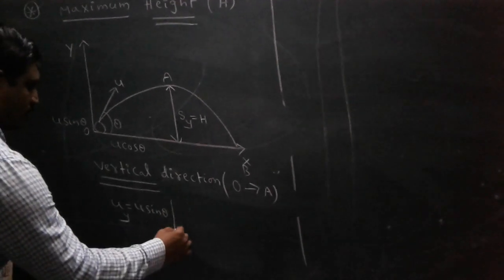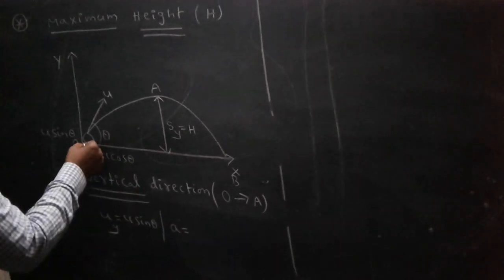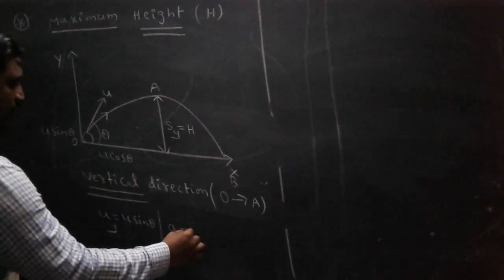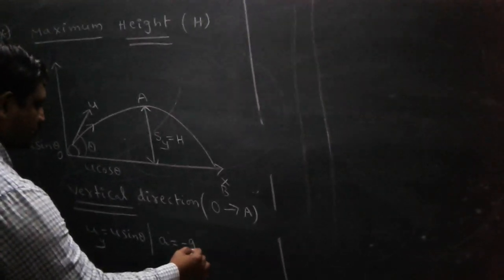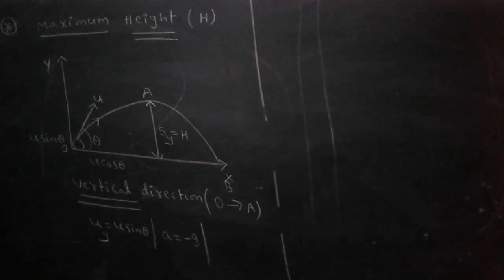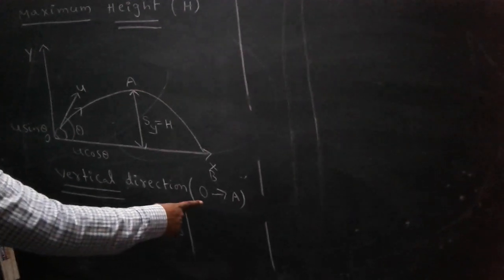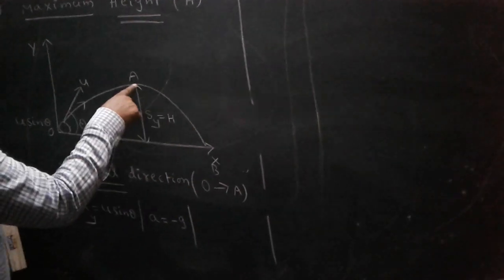Next, the body is moving upward, so the acceleration value is taken as minus g in the vertical direction O to A. At A,